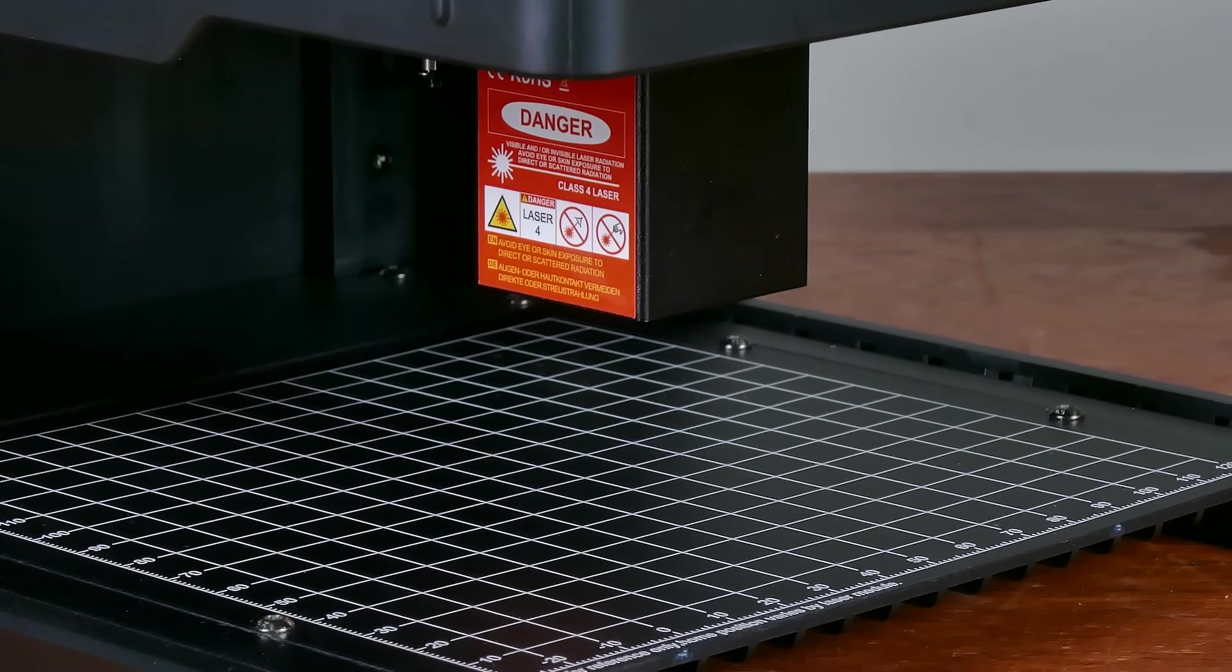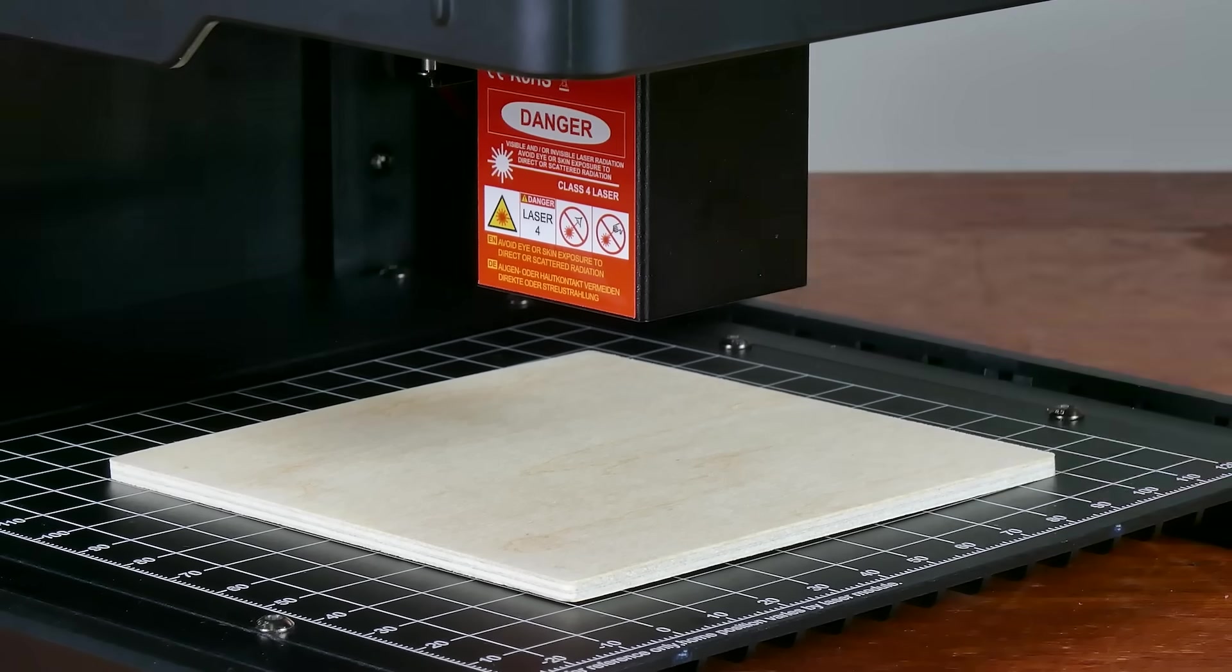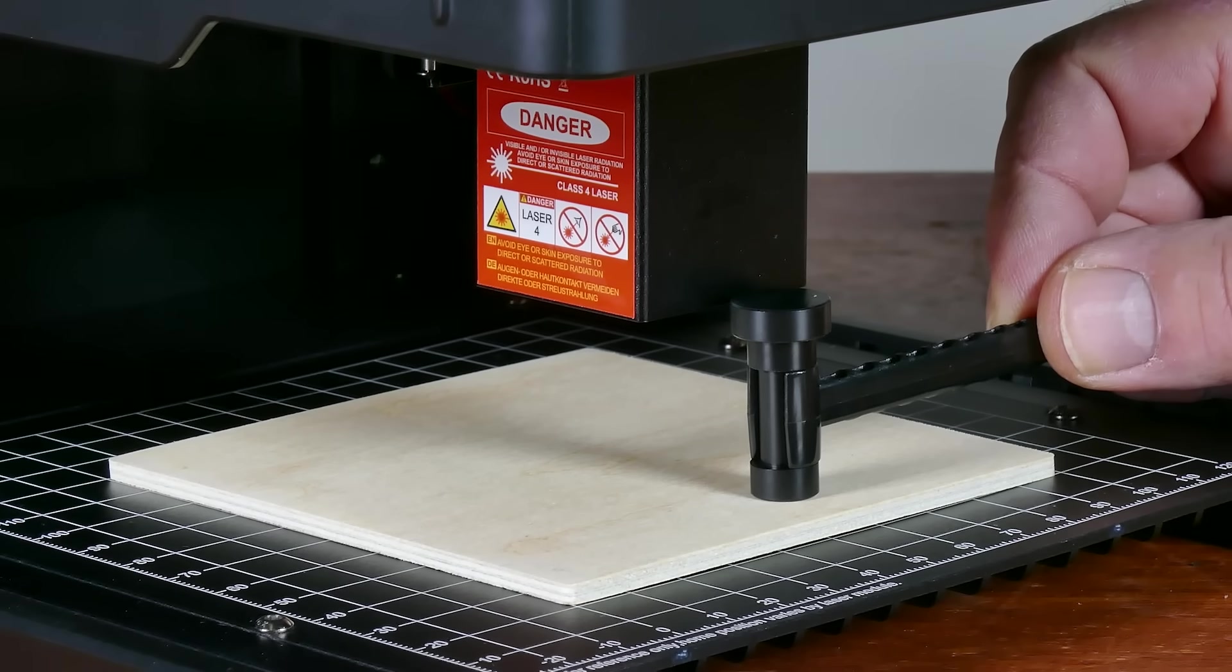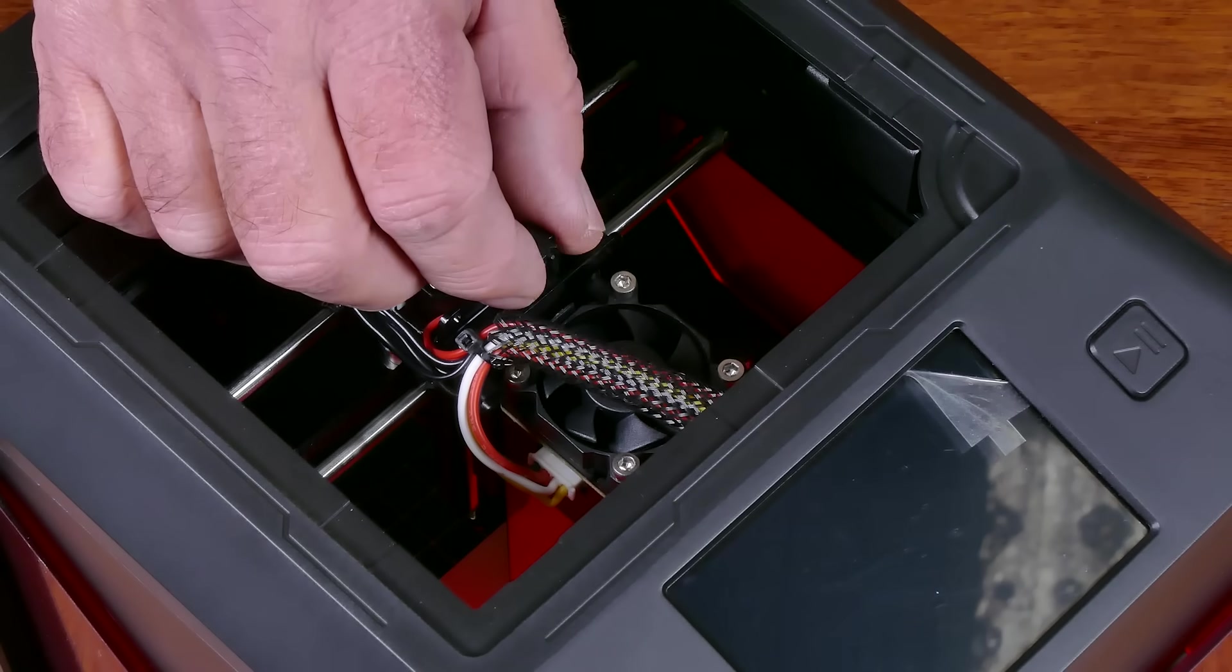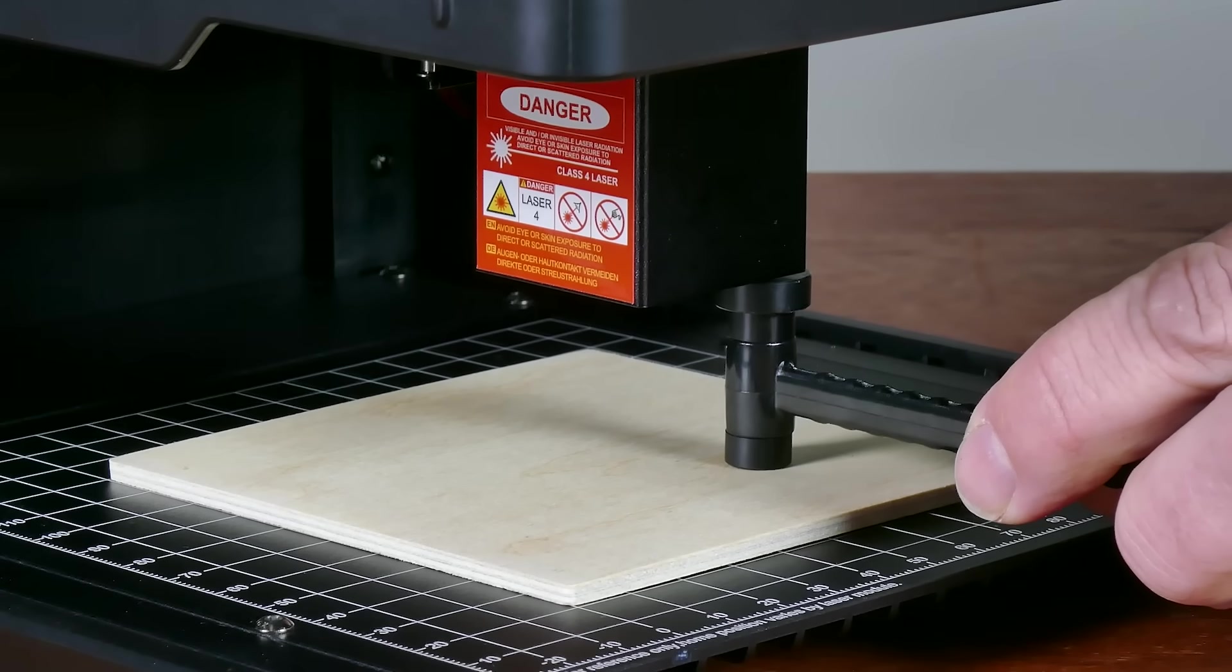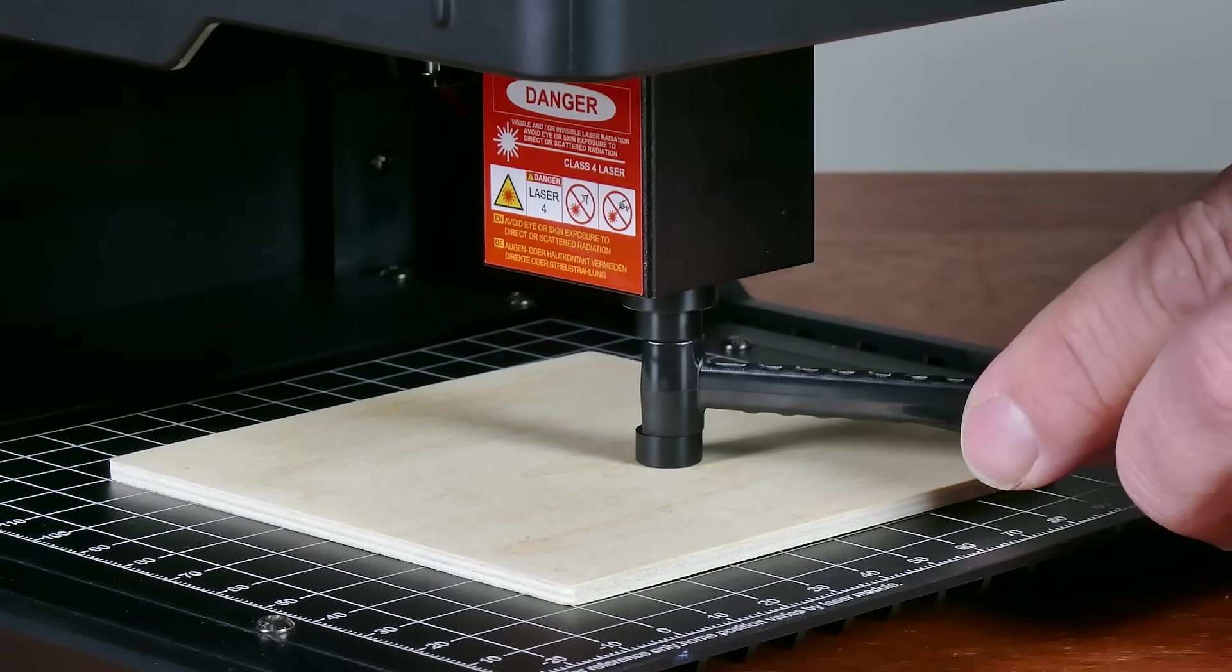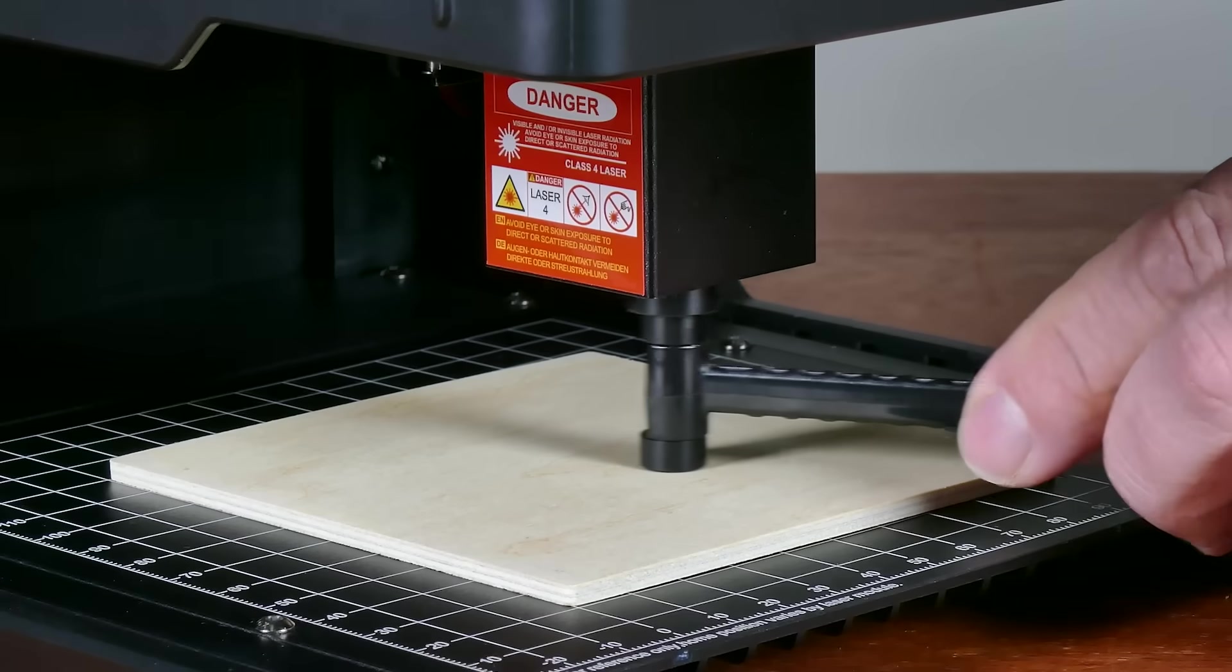But before we go any further, we need to adjust the height of that laser head above our material. Algo Laser supplied this cute little hammer which is actually a height gauge. It's just a matter of taking off the lid and there's a little knob on top of the laser and you can turn it left or right, and that increases or lowers the height of that module. The result I was trying to achieve was to get that little hammer to be able to slide to and fro with a minimal amount of resistance.